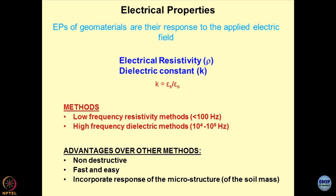The electrical properties are electrical resistivity and electric constant — as studied in 10+2 physics. There are two broad methods of determination of electrical properties. One is the low frequency resistivity method, where the frequency of current is less than 100 hertz. The second category is high frequency electric methods, where frequencies are up to the order of mega to gigahertz.